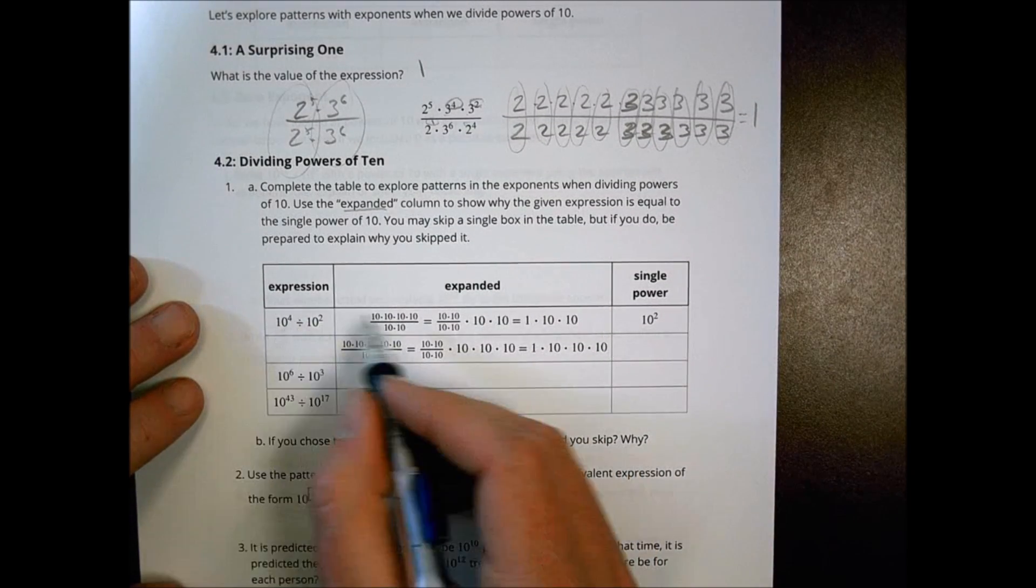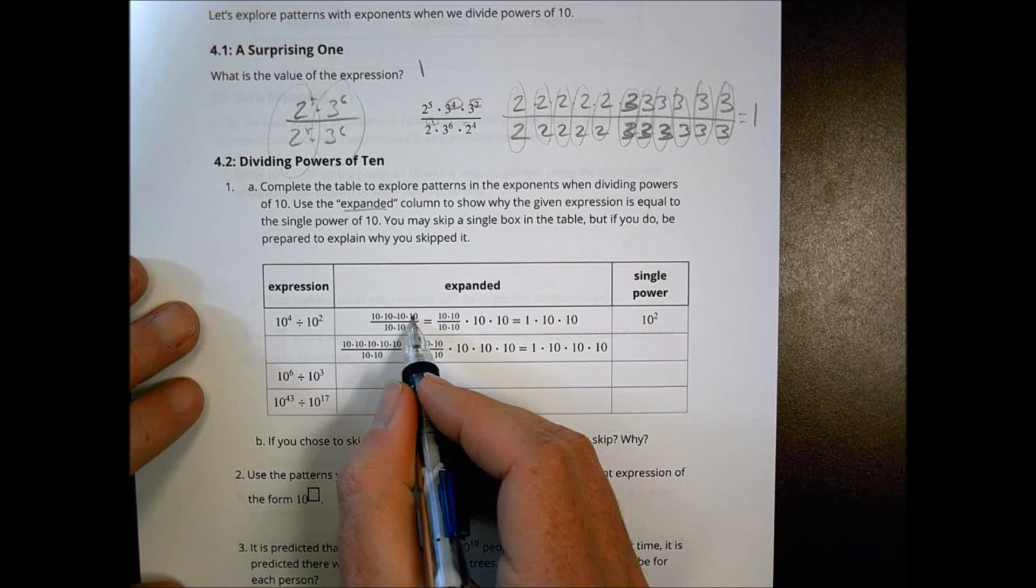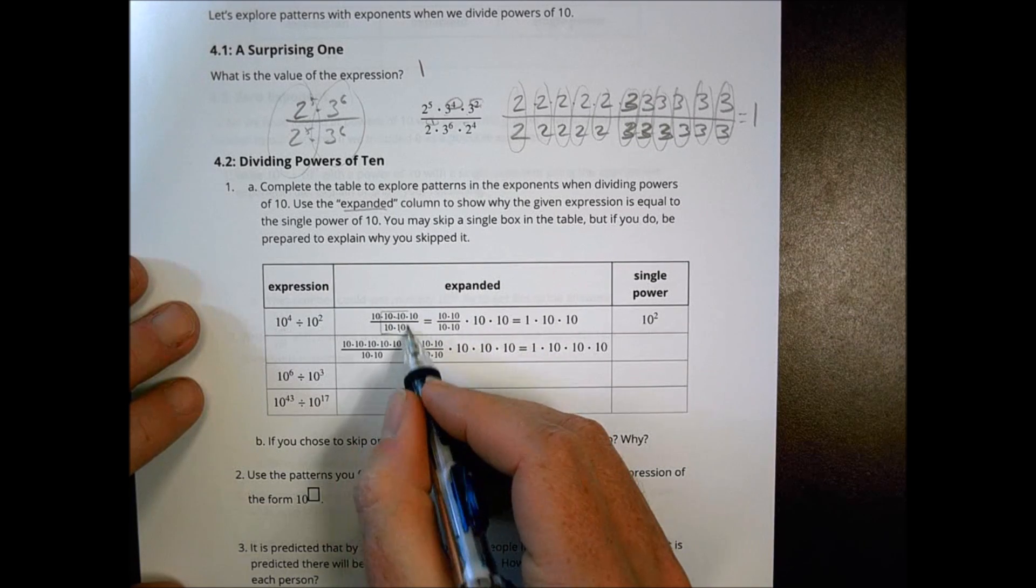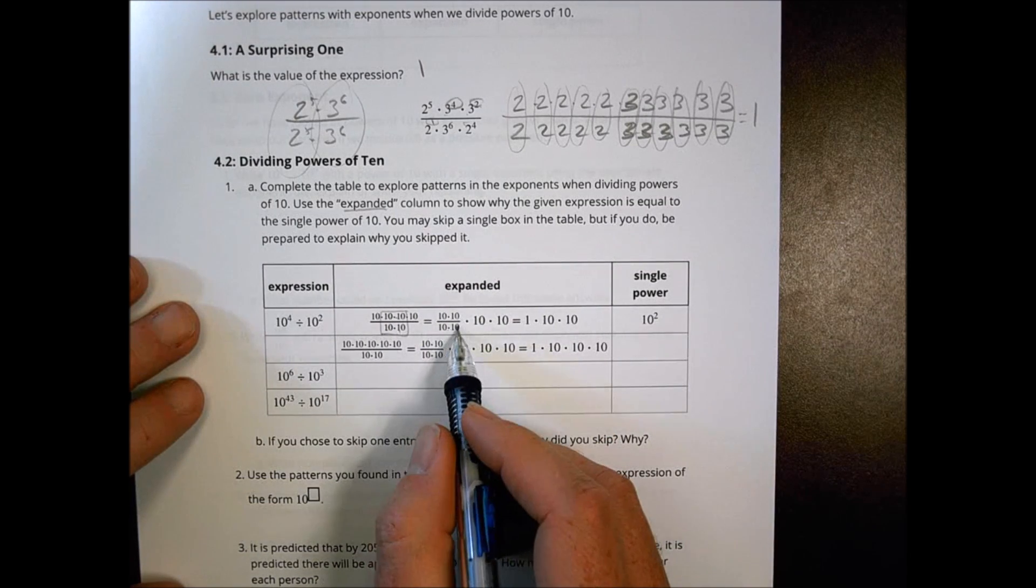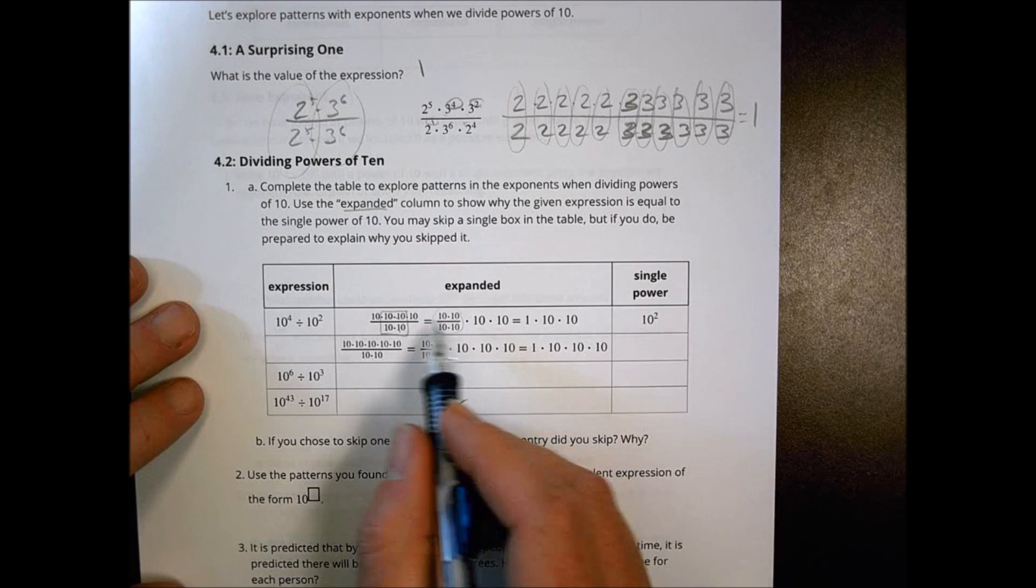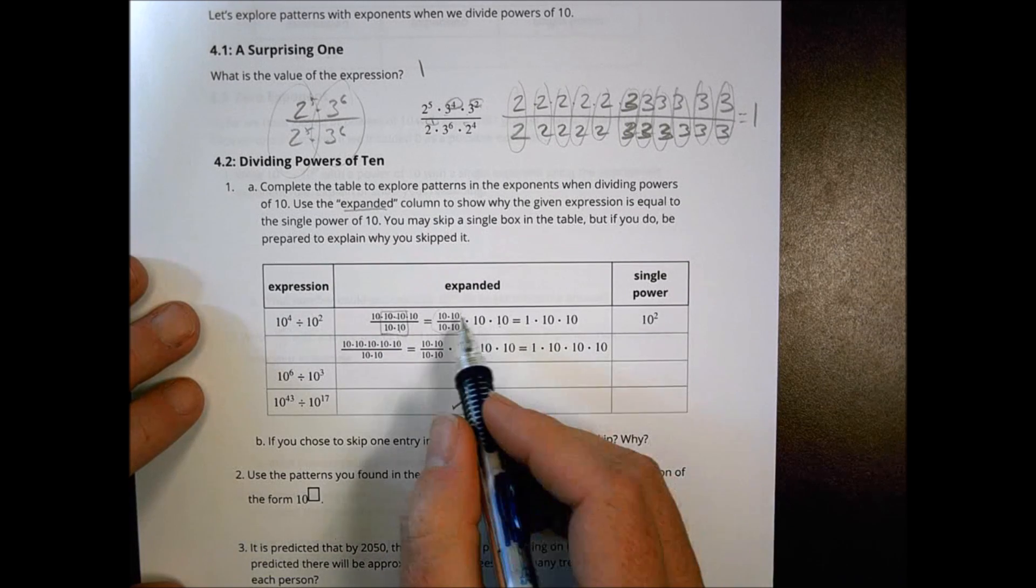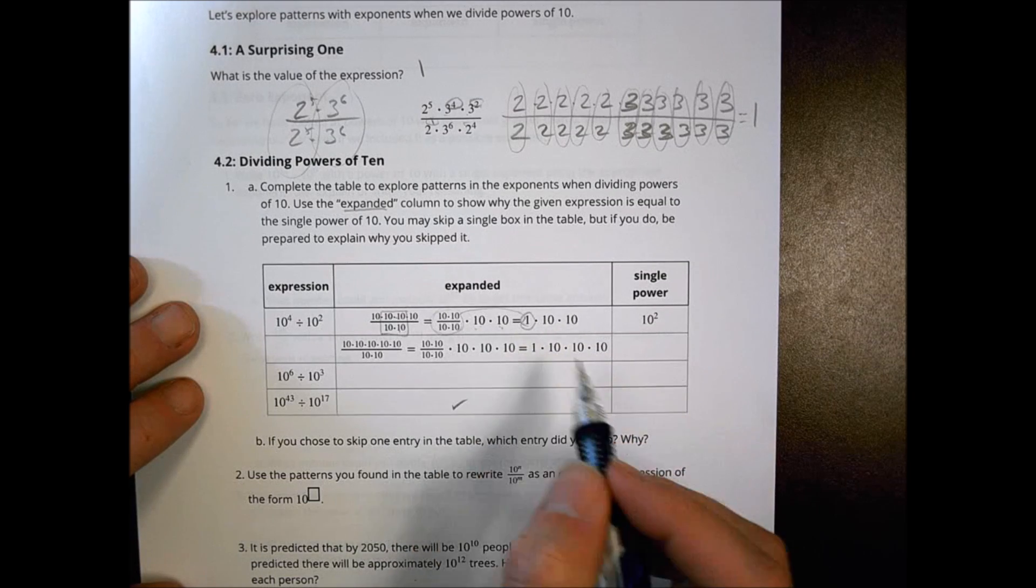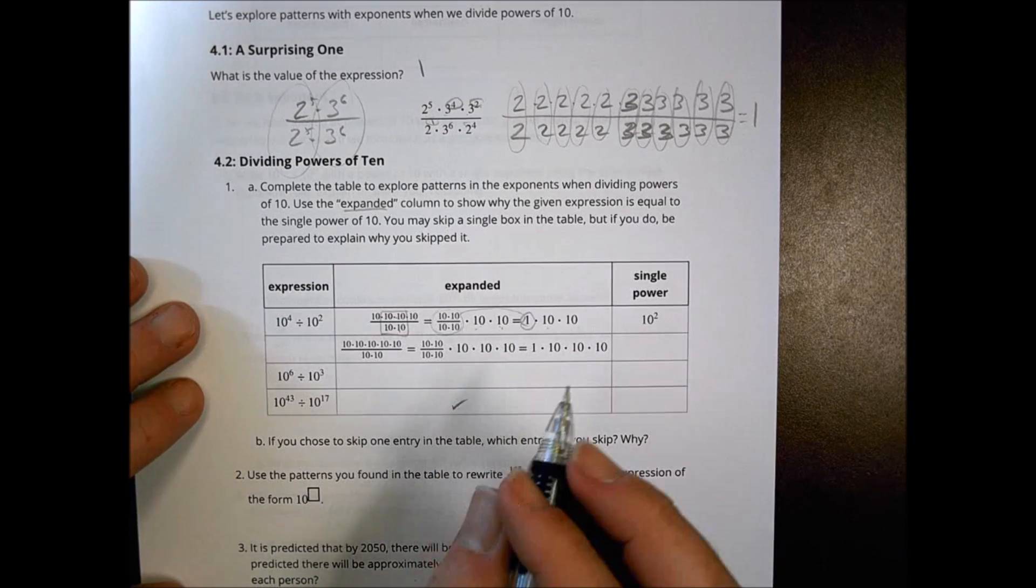So here we have ten to the fourth, which is here, one, two, three, four, divided by ten squared. And then rewrite this then as saying, well, let's cluster those together, and we'll write them like so, and then keep what's left on its own out there. So that all becomes one, and what you're left with is just the two tens, which is ten squared. No problem.